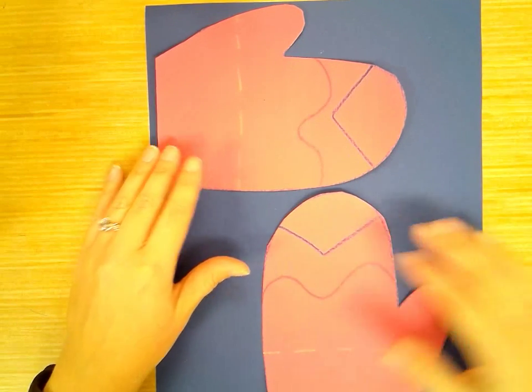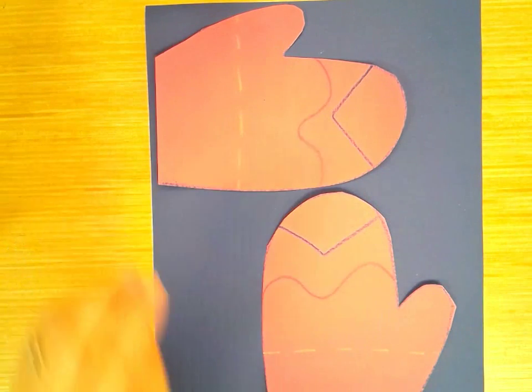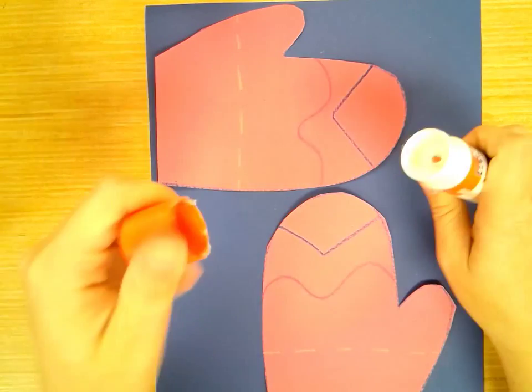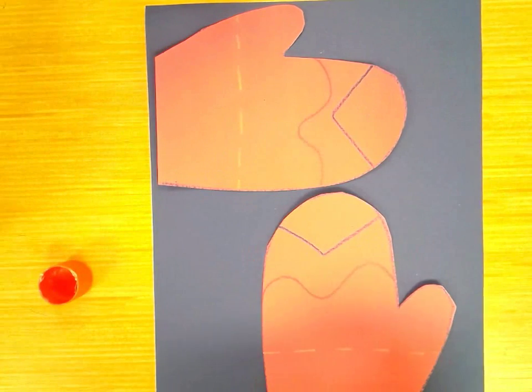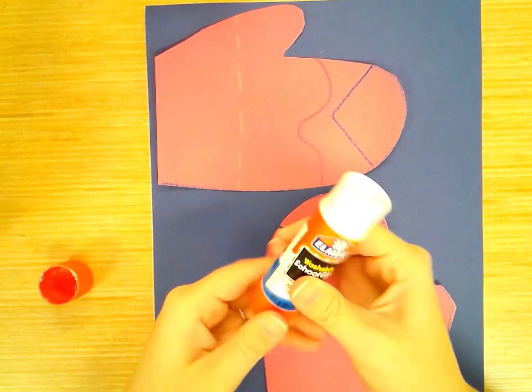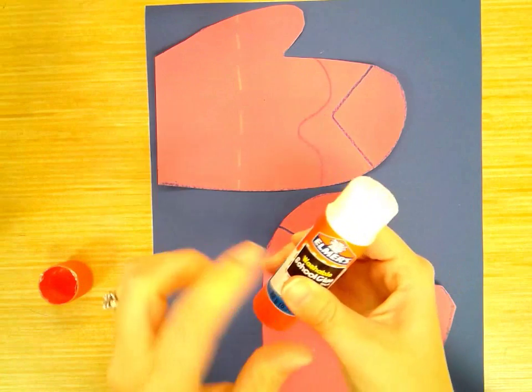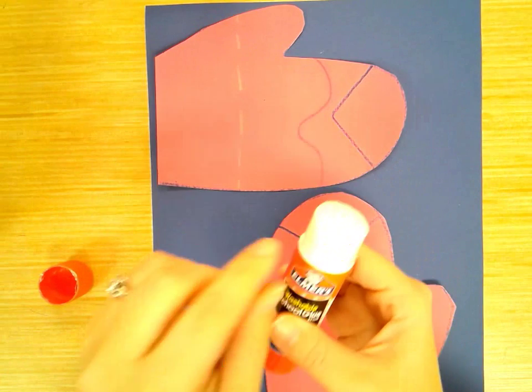So once you have them like this, then you're going to glue them down. When you glue them down, you're going to take your glue stick, and you want just a little bit of glue out. So if there's a lot of glue out, you need to twist it down, but just a little bit sticking out the end.